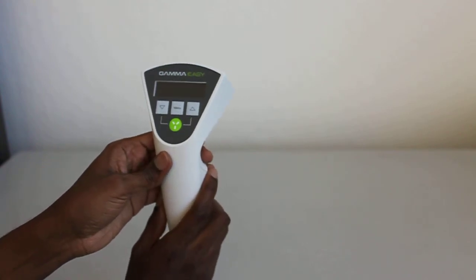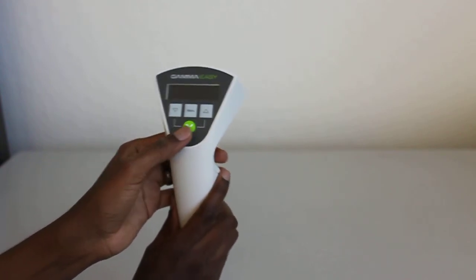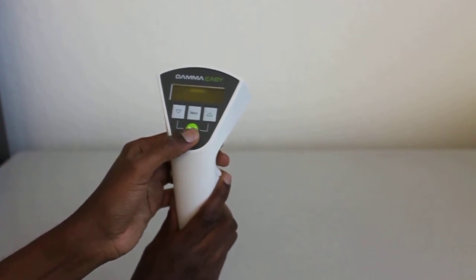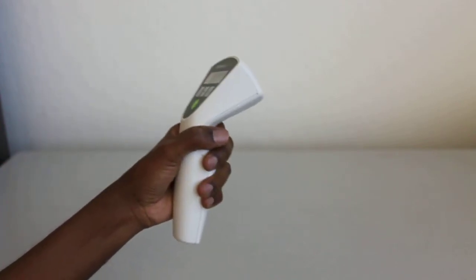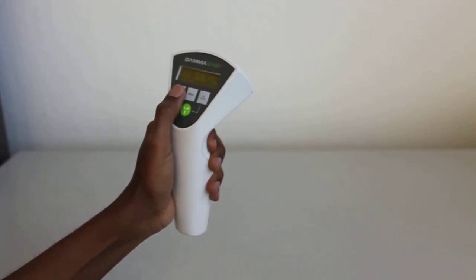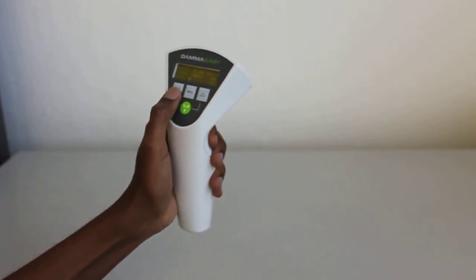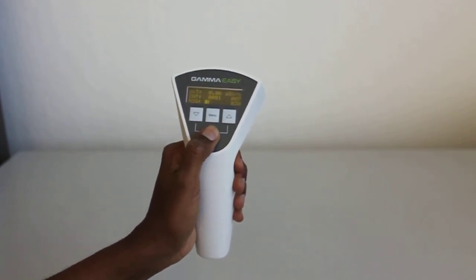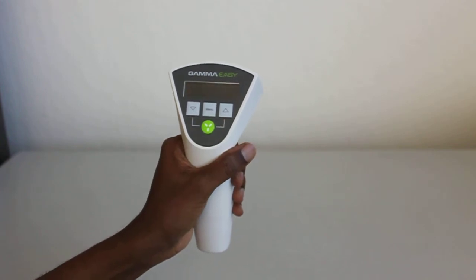To turn on the unit, you press this green button here. As you can see, it fits very nicely in the hand and all the functions can be operated by one thumb. To turn the unit off, you just need to press for about three seconds until you see the off sign over there.